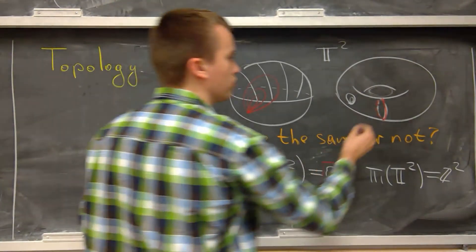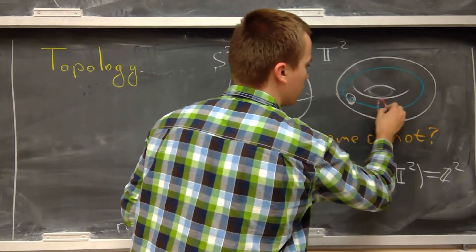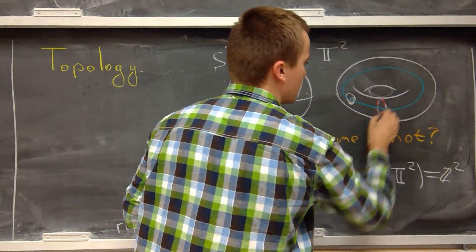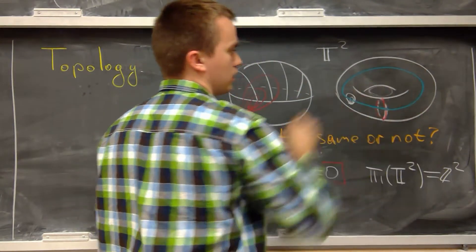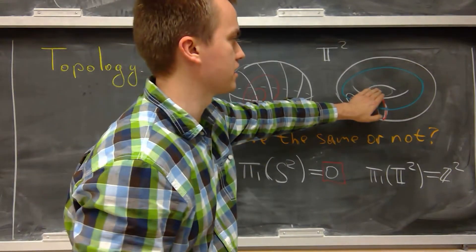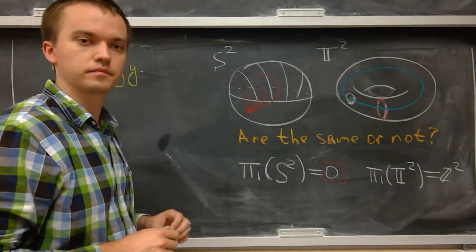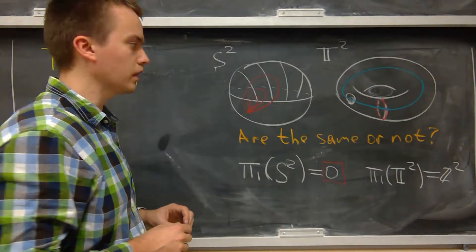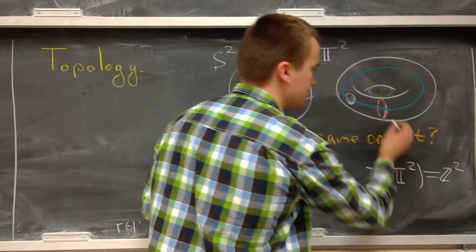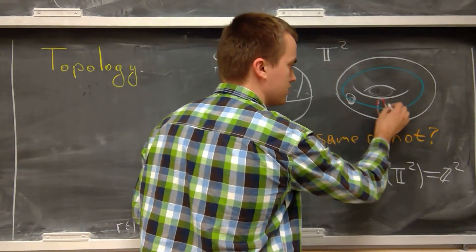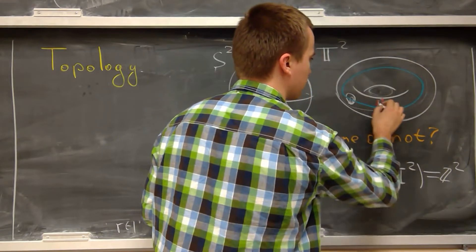On the torus there are two distinct kinds of loops: one that goes around the hole through the middle, and one that goes around the circular tube itself. That is why the fundamental group is Z × Z — one Z is generated by one loop and the other Z is generated by the other loop.